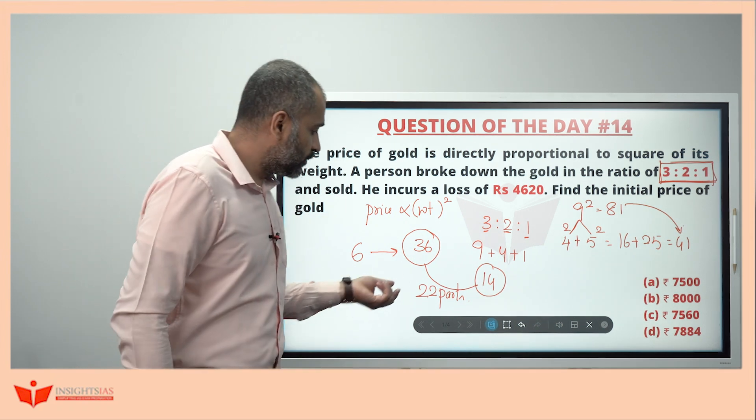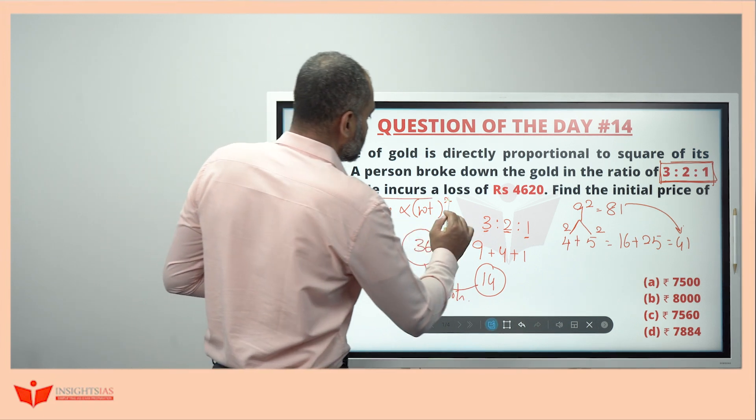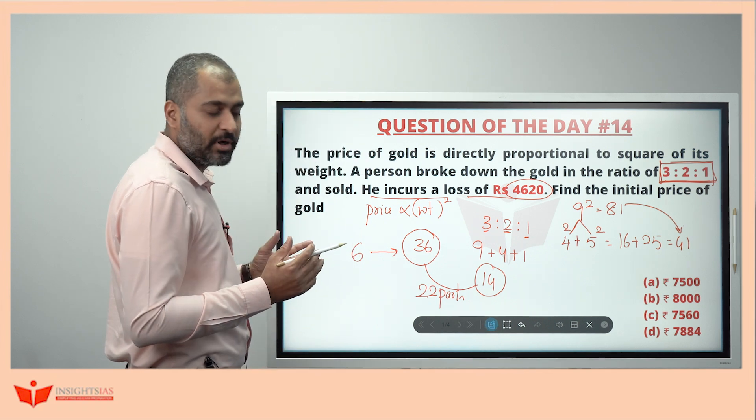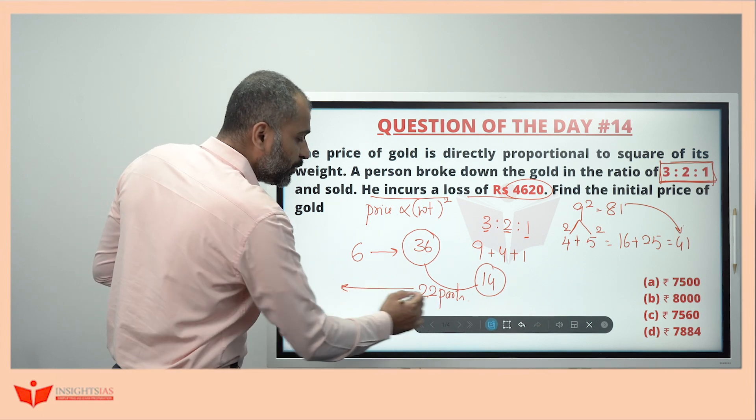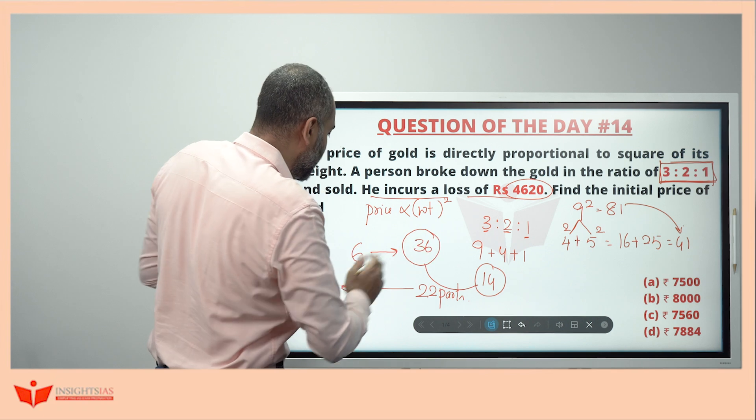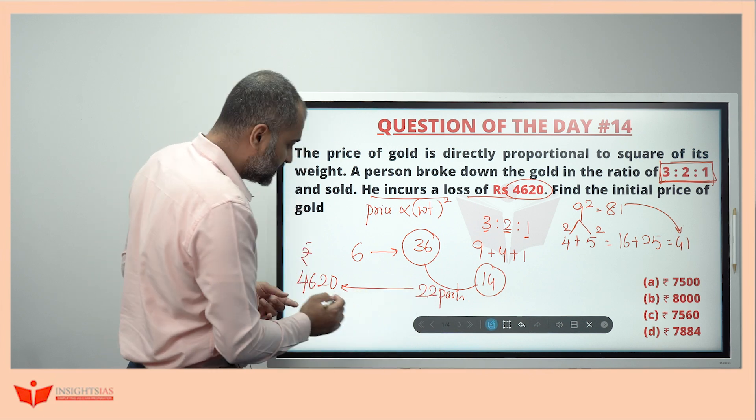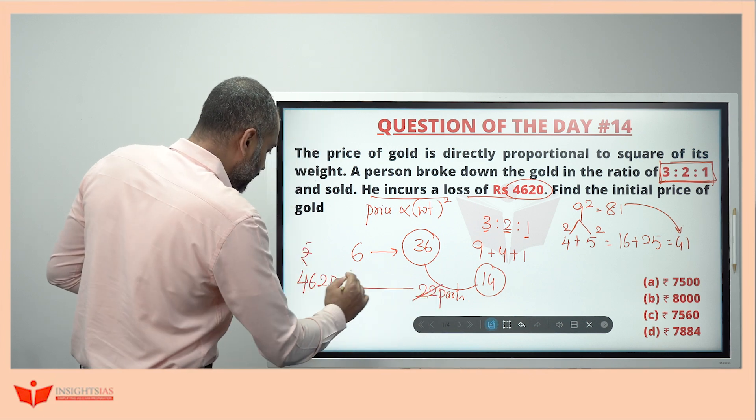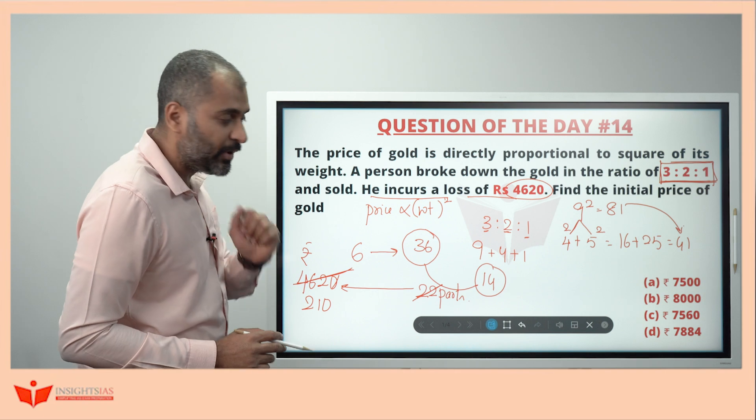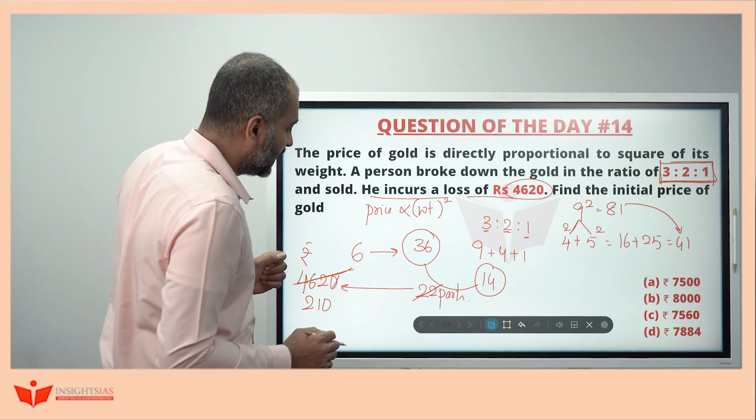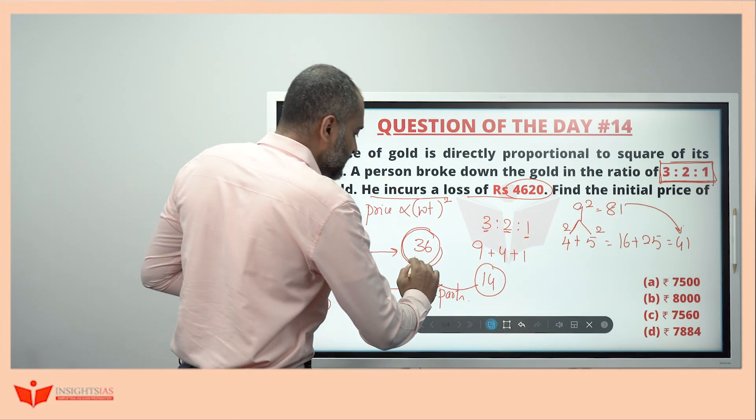As I have told you in the previous videos also, 22 parts. This has been reduced by 22 parts and according to the question, he incurs a loss of 4620. So 22 parts reduction or the loss, it's one and the same. So 22 parts is equal to 4620 rupees. If 22 parts is equal to 4620, one part is 210. If one part value is 210, then the original value was 36. Initially, it was 36 parts.